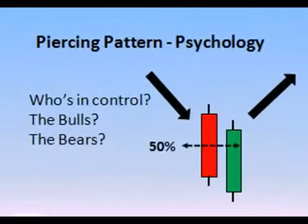Let's consider the psychology or the sentiment of the piercing pattern. Who is in control, the bulls or the bears? The first candle continues the downtrend. Everything is looking bearish. The second candle ideally gaps down at the open to here. Not essential and not possible in some markets such as intraday Forex. But if it does, the bearish trend appears to be continuing again.